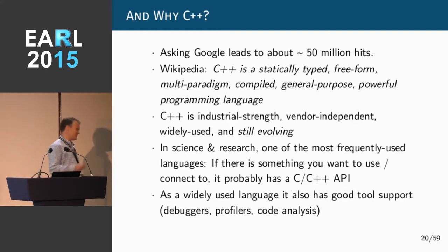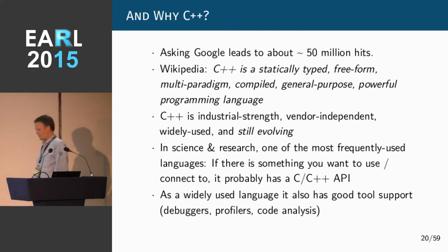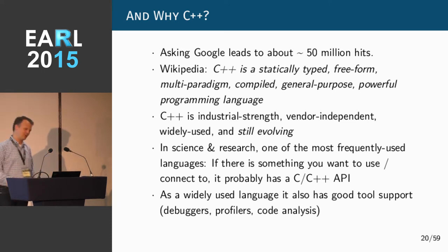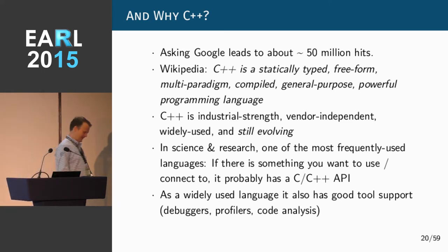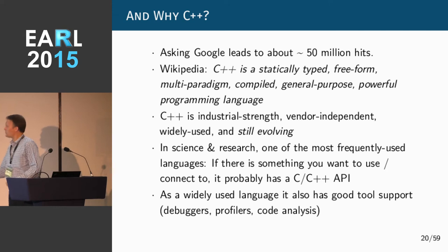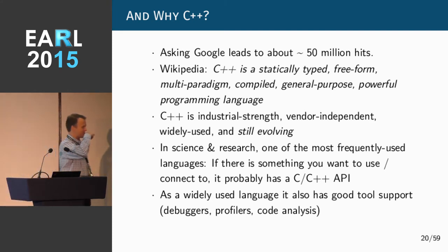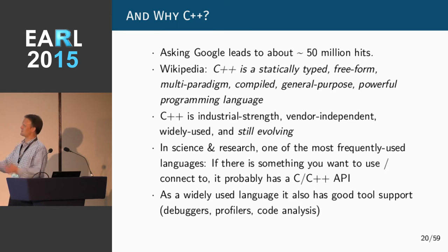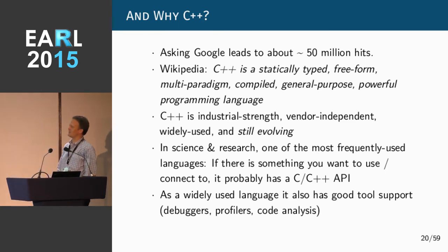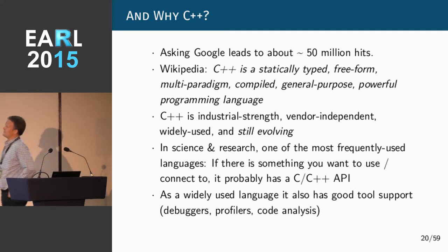That settles extending R. Why on earth would we use C++ for that? If you ask Google "why C++," you get 46 to 52 million results - obviously lots and lots of answers. Wikipedia has a perfectly fine if overly pedantic definition: statically typed - meaning unlike R, when you want a double you have to say double and it remains a double. Free-form multi-paradigm means you can program different ways. It is compiled - yes, that's where we get the speed. General purpose - it's not a domain-specific language.